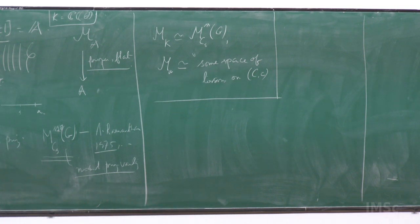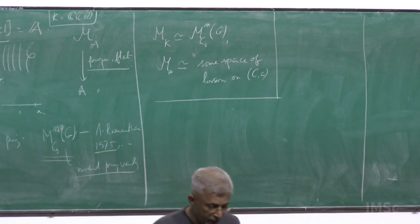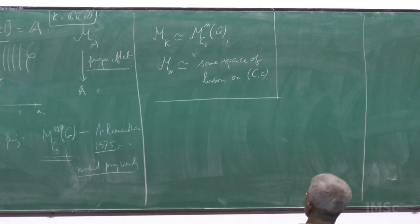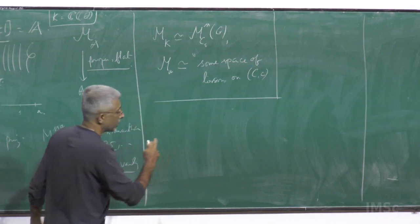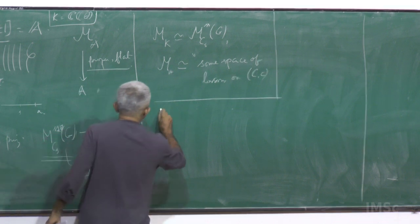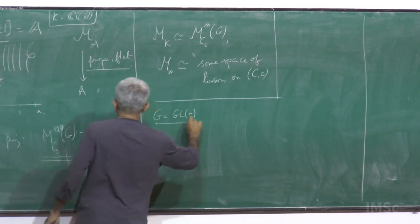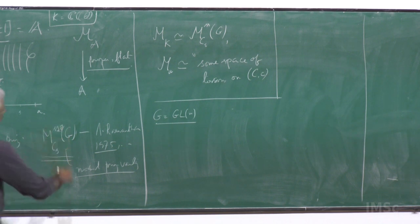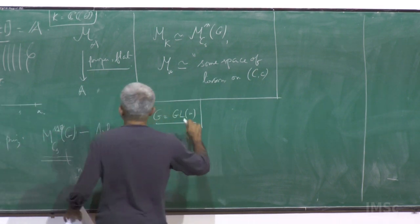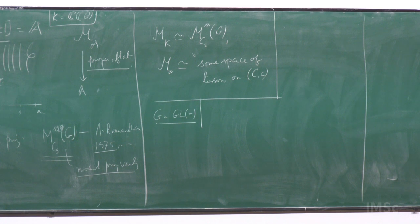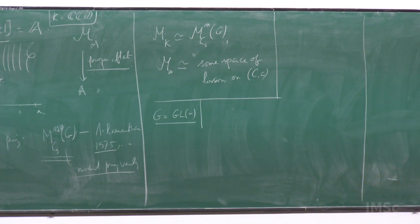This is the basic question: constructing a flat degeneration of these moduli spaces, which are Ramanathan spaces, when the curve degenerates to a simple nodal curve. The same question could be asked for any stable curve. A few words about the history. In the case when G equals GL_N, this has been studied for a long time. It begins with — I'm not talking about the line bundle case, where degenerations of these Picards have been studied — and completes with the work of Oda-Seshadri. And then there is work of several others.